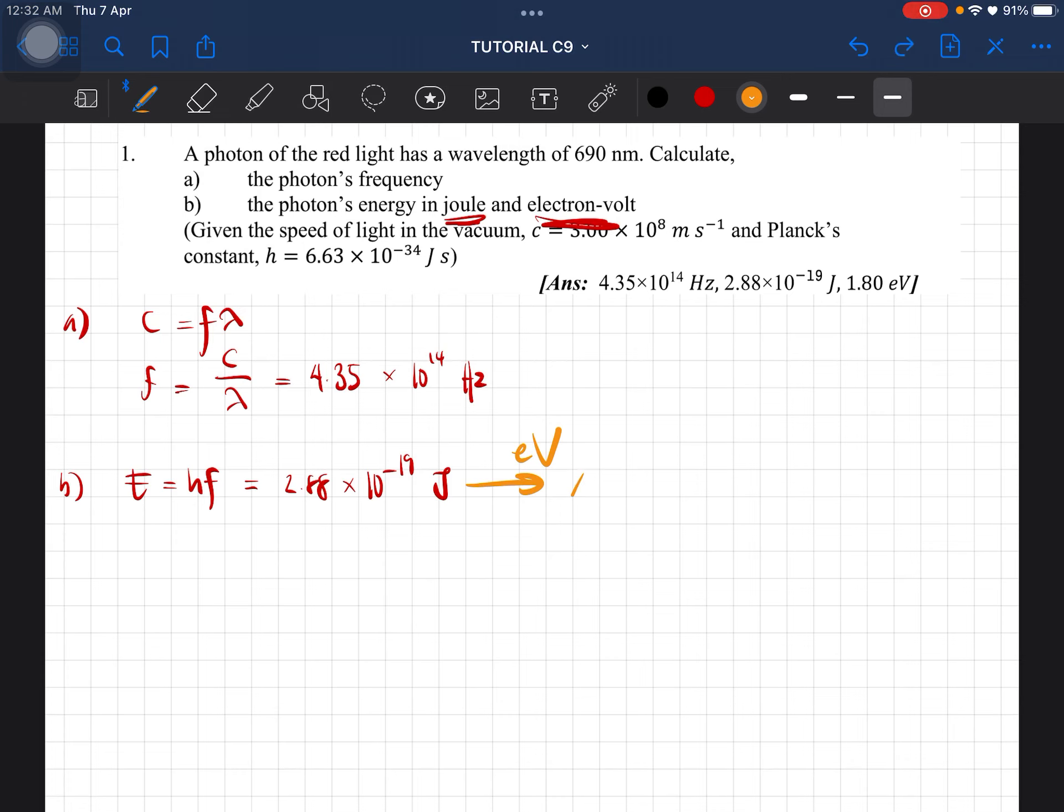To convert this into electron volts, we divide it—sorry, not multiply—we divide it by 1.6 times 10 to the power of negative 19. This gives us the energy in electron volts, which is 1.8 electron volts.